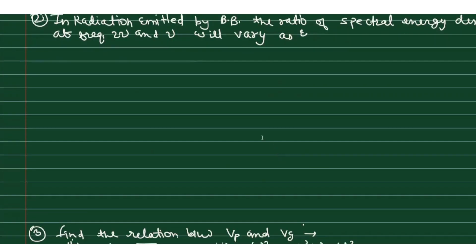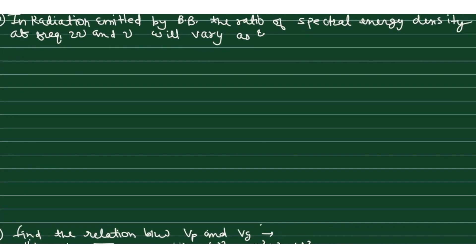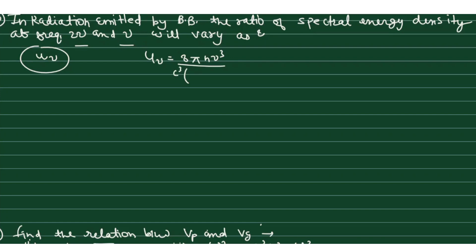In the next question, we are asked about radiation emitted by a black body — specifically the ratio of the spectral energy density at frequencies 2ν and ν. We have to check what is the ratio of the spectral energy density u(ν). The spectral energy density expression is u(ν) = 8πhν³/c³ · 1/(e^(hν/kT) − 1). You should remember this expression — it is very helpful and comes from Planck's law.